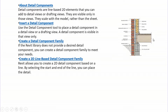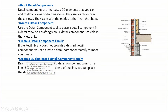In short, use the Detail Component tool to place a detail component in a detail view or drafting view — it is visible in that view only. If the Revit library does not provide a desired detail component, you can create a detail component family to meet your needs. Revit also allows you to create a 2D line-based detail component by selecting the start and end of a line to place the detail.